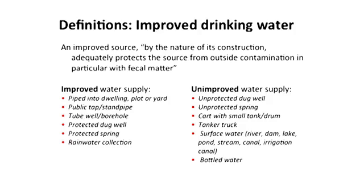For unimproved water supplies, this would include unprotected wells or unprotected springs, surface water — rivers, lakes, ponds, or streams. The definitions also include water vendors, when water is delivered by cart from small tankers, in drums, or from a tanker truck. But if you think about it, this is again kind of arbitrary. Piped water services that are only available one or two hours a day, or for a few days a week, are not really improved, especially if they're not potable. So again, this is kind of an arbitrary definition that we're going to be looking at.